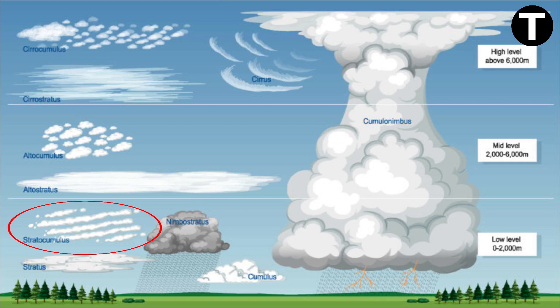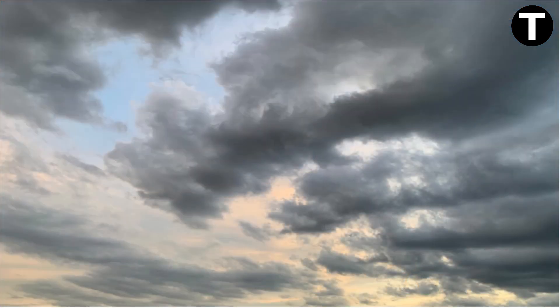Stratocumulus clouds appear in larger, rounded masses and often gather in groups, lines, or waves. Their convection is limited by the upper layer's stability.